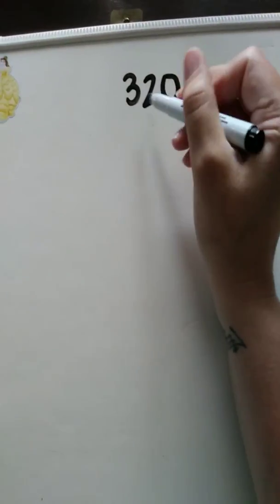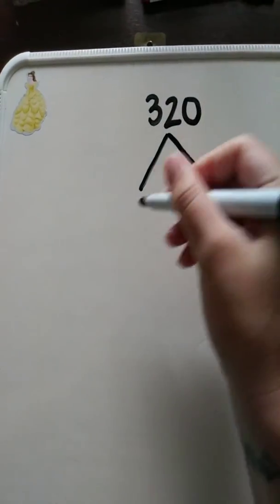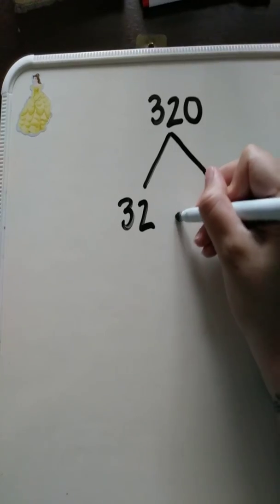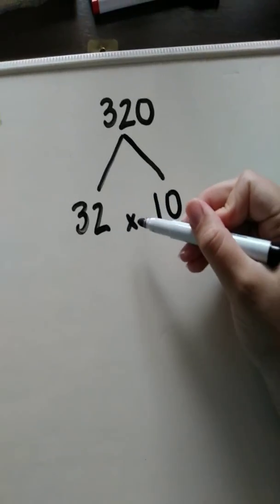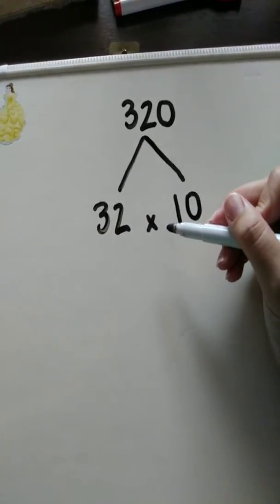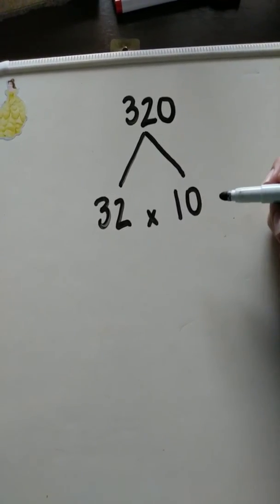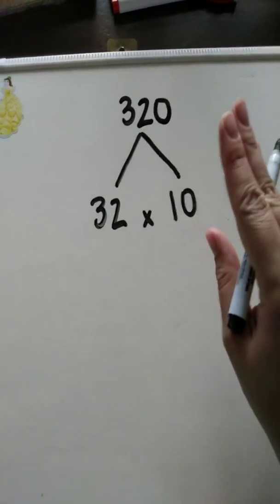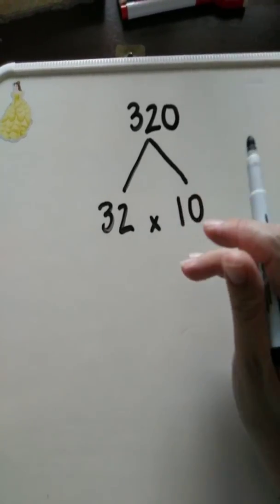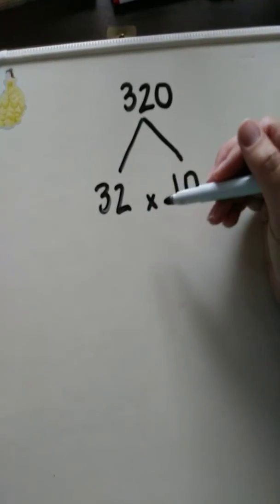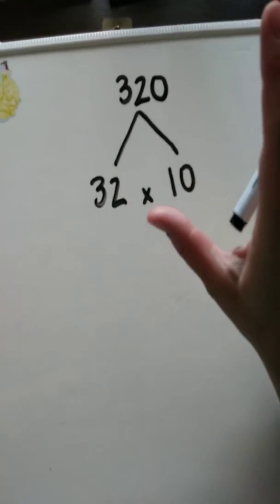Yes — times 10. So 32 times 10 is what we're going to start with. Be careful: make a decision at the beginning about whether you're going to include the multiplication symbol. If you want to keep it in there, leave it in throughout. If you do not want to put it in, then do not put it in. Don't go back and forth.